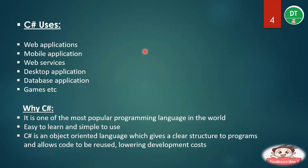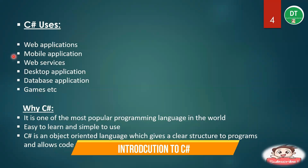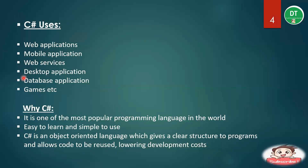Now we'll understand why we use C# and what are its uses. C# is used for creating web applications, mobile applications, web services, desktop applications, database applications, games, etc. C# is one of the most popular programming languages in the world. It is easy to learn and simple to use. C# is an object-oriented language which gives a clear structure to programs and allows code to be reused, lowering development costs.